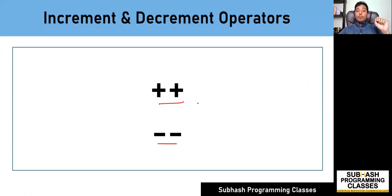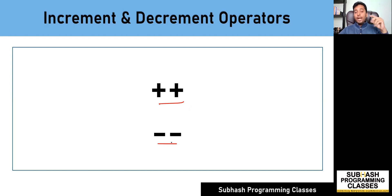Increment operator comes in two variants. One is called the post increment operator and the other one is called the pre increment operator. Similarly, the decrement operator also comes in two variants: the post decrement operator and the pre decrement operator. Let's see what is the difference between these two variants of each of these operators one by one.